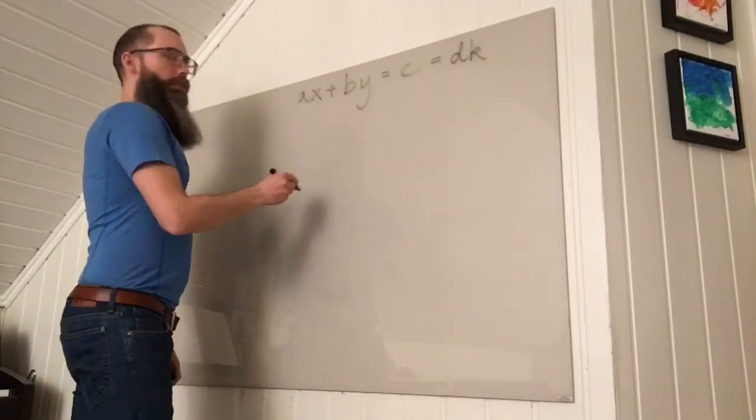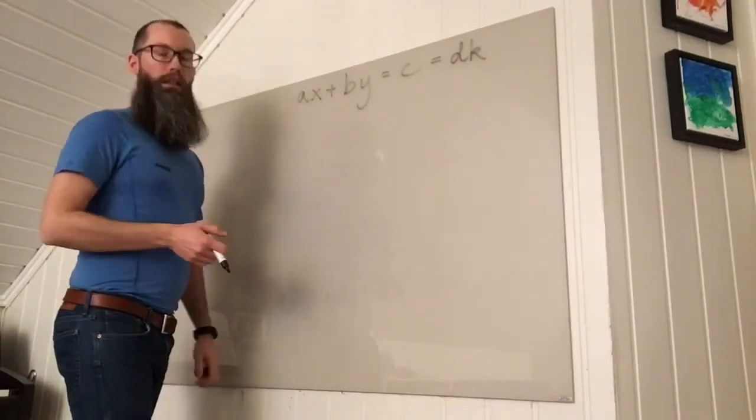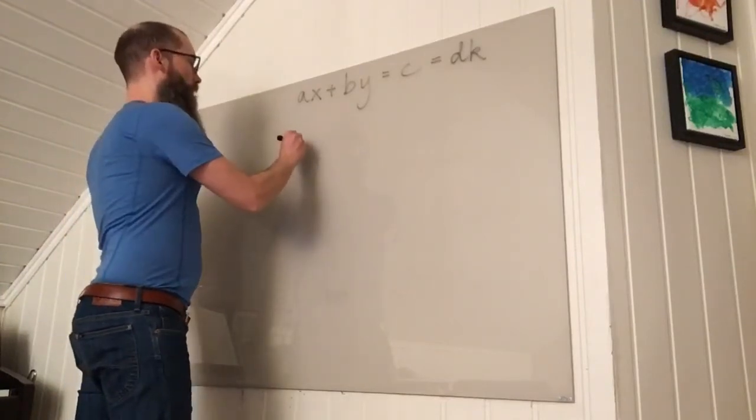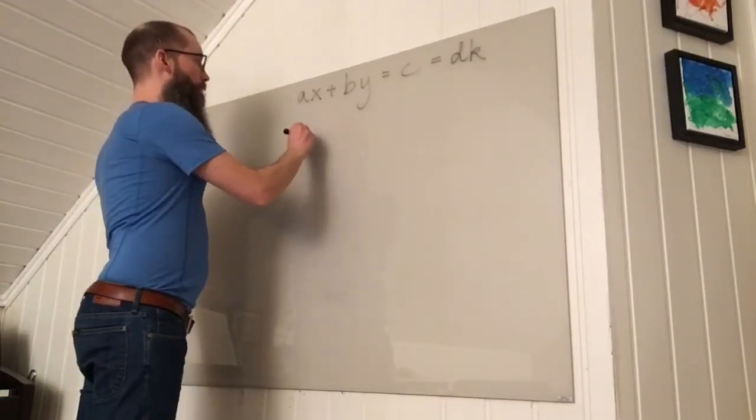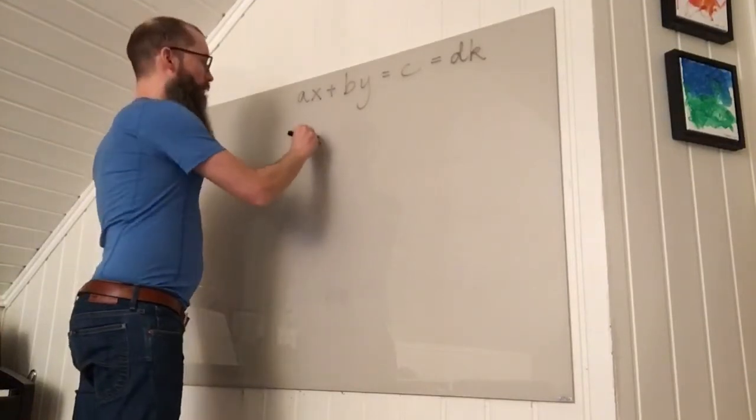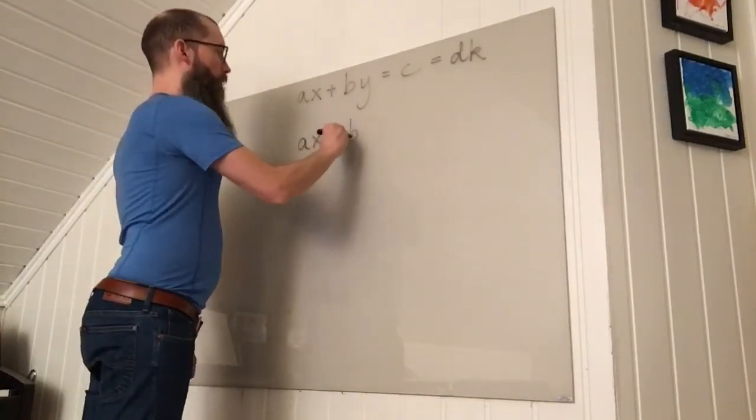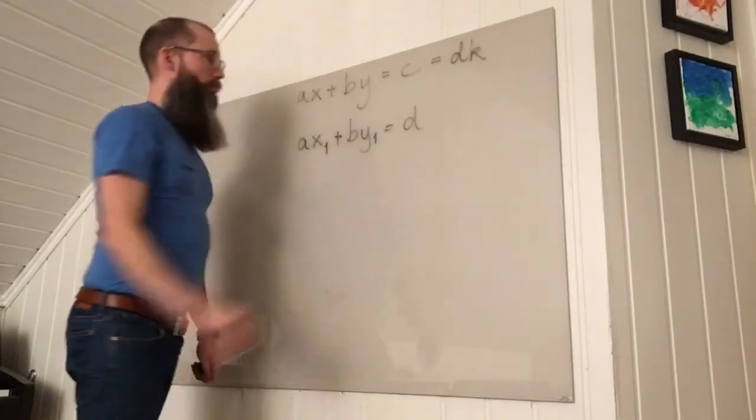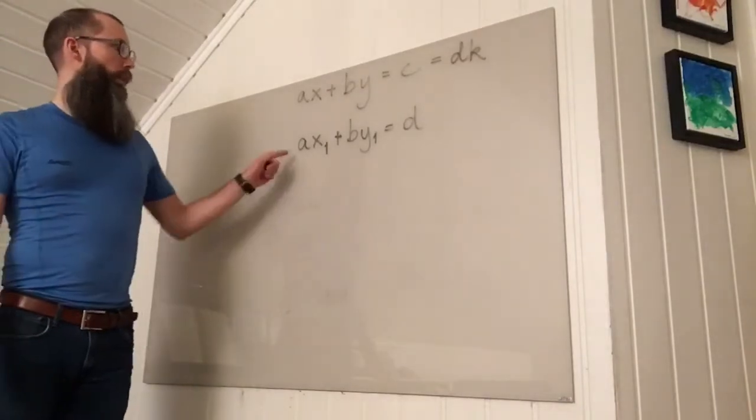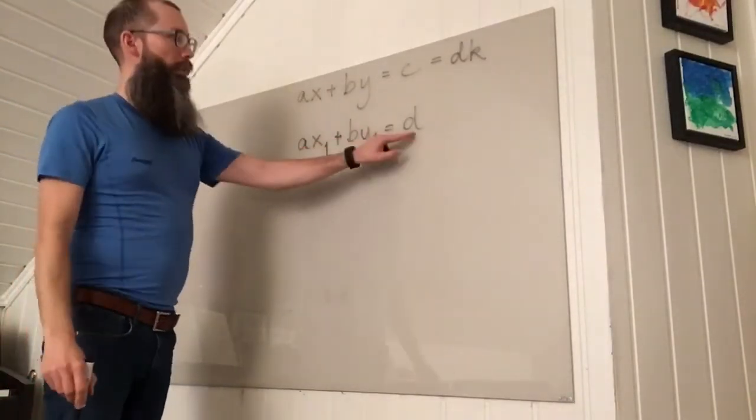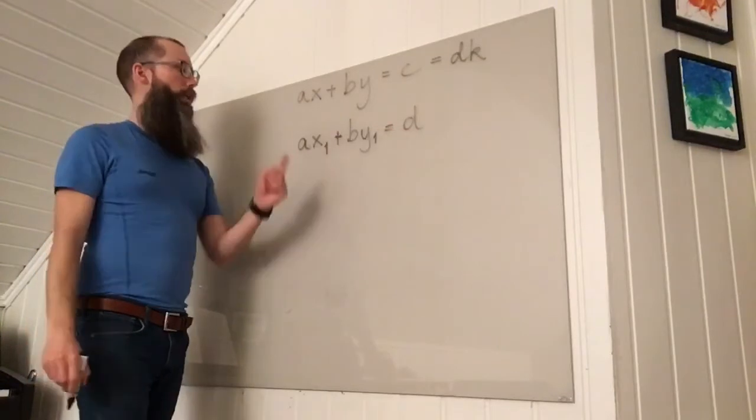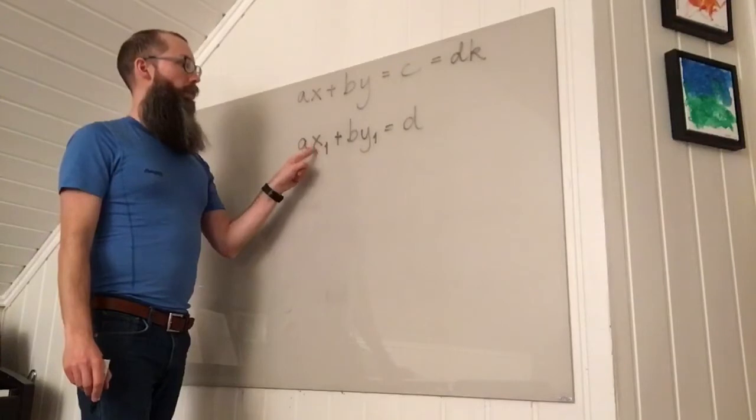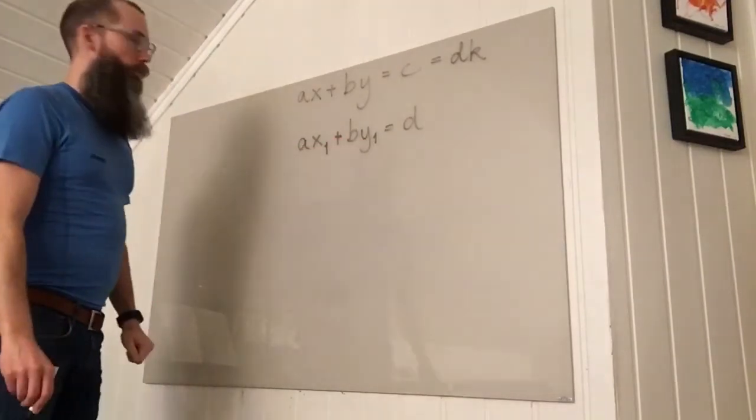We know that the greatest common divisor, after employing the extended Euclidean algorithm, we can find X and Y, let me call them X1, Y1, so that A X1 plus B Y1 equals D. We know that the greatest common divisor can be written as a linear combination of A and B. So we just use X1 and Y1 for the required coefficients.